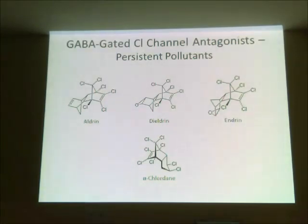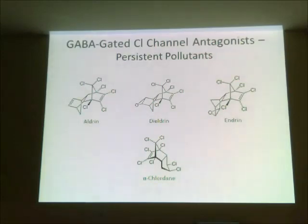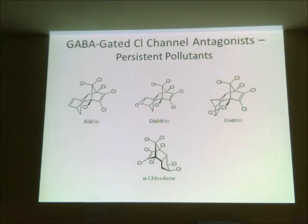Some of the earlier compounds were aldrin and dieldrin, named after the Diels-Alder reaction used to make them. They differ by the fact that dieldrin has an oxygen inserted across a double bond, forming a three-membered oxirane ring. Endrin is another compound, a different isomer of dieldrin where a group is attached in an inverted orientation. These three compounds are very similar and extraordinarily persistent. Their production and use in the United States is now forbidden.